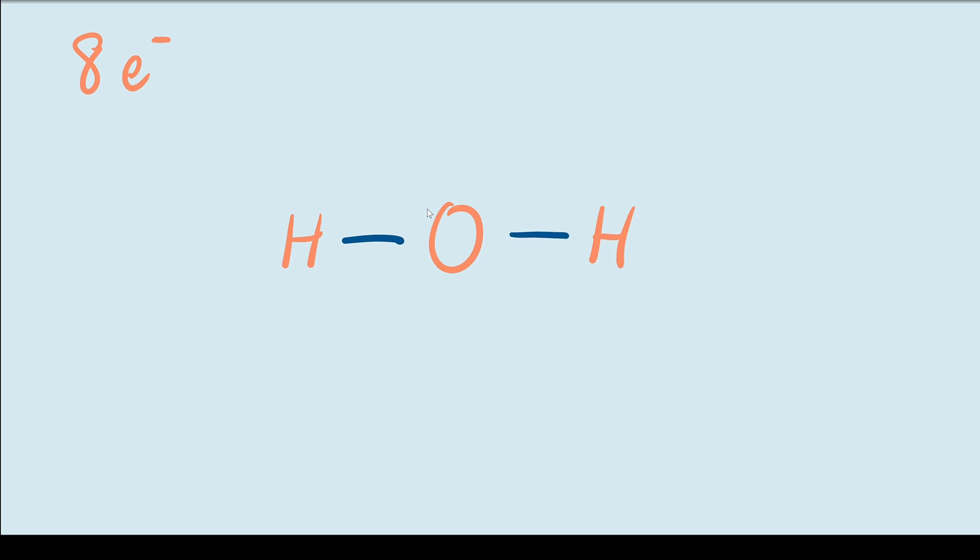After doing this we can start filling in electrons. We already have 2 single bonds which accounts for 4 electrons. So if we take that out from our total, we have 4 more electrons that we need to use for the remainder of our molecule.